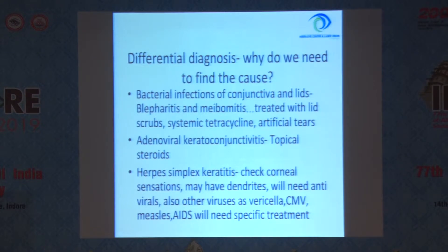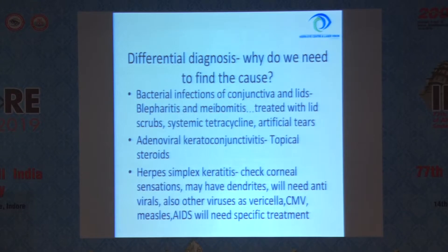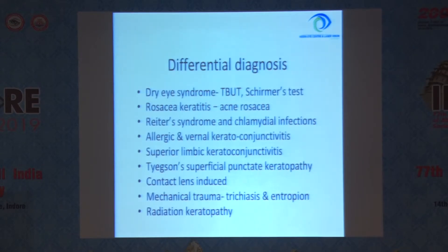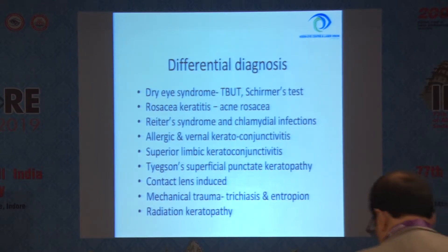Why do we need to find the cause? Because the treatment would vary according to the cause. Bacterial infection of conjunctiva and lids like blepharitis and meibomitis are to be treated with lid scrubs and systemic tetracycline with artificial tears. While adenoviral keratoconjunctivitis will have to be treated with topical steroid, herpes simplex would need different management. Differential diagnosis would include dry eye syndrome, for which you have to do tear film breakup time and Schirmer's test. Rosacea keratitis — acne rosacea on the face is diagnostic.